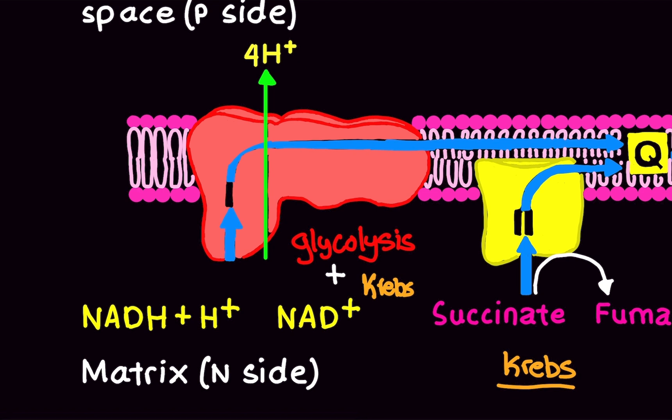So we use the malate aspartate shuttle, which I made a video on last time. And I mentioned that the malate aspartate shuttle helps us bring in NADH plus H into the matrix of the mitochondria for Complex 1. In addition, the Krebs cycle also brings in NADH plus H. So this is where the NADH plus H is coming from. These are electron carriers that are coming from the glycolysis and the Krebs cycle. And here's what's going to happen.